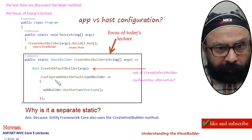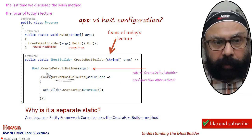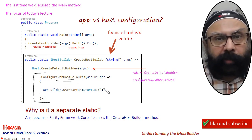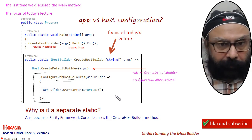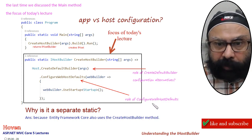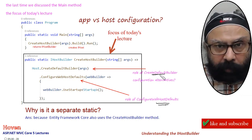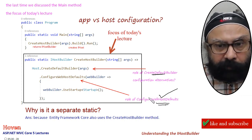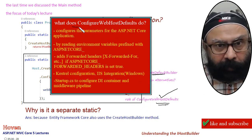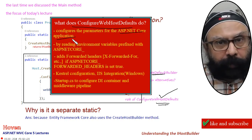Now let us come to configureWebHostDefaults. As I already told you, this configureWebHostDefaults performs the configuration for the ASP.NET Core application service. It reads the environment variables that are prefixed by ASPNETCORE underscore.